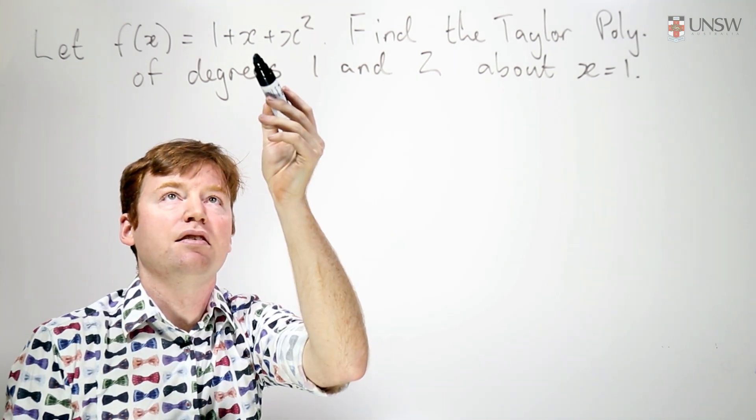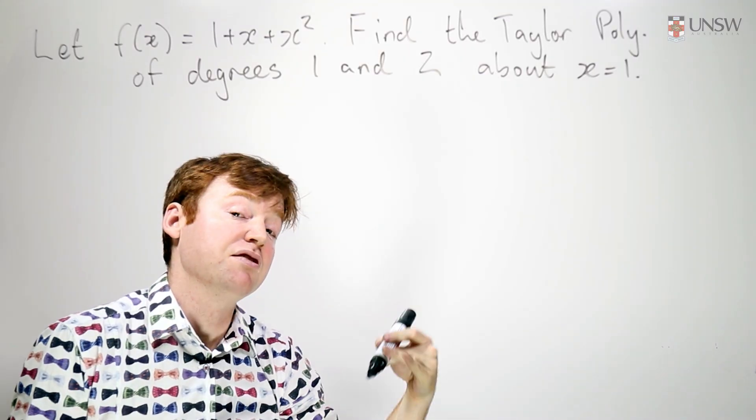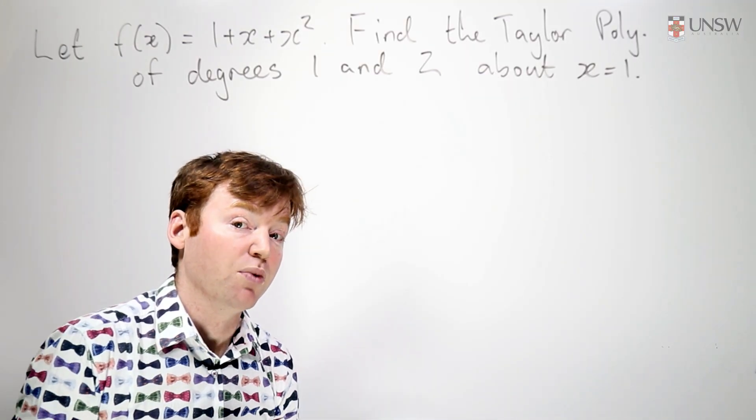This already is a Taylor polynomial about 0, but we need to express it as a Taylor polynomial about the point 1.